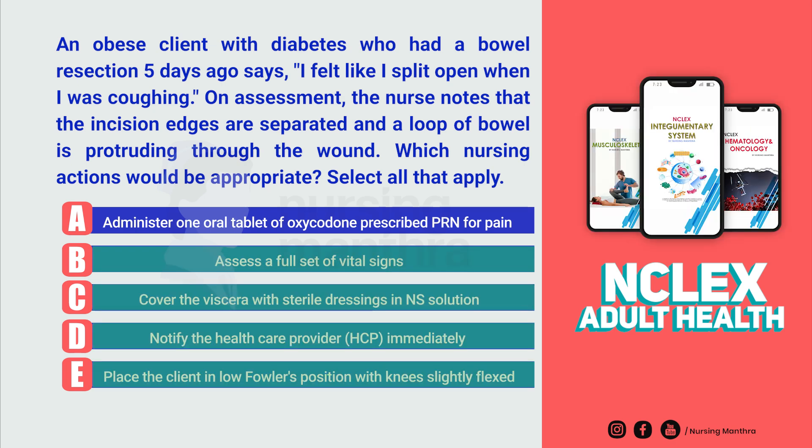The answer is options B, C, D, and E. That means: Option B — Assess a full set of vital signs. Option C — Cover the viscera with sterile dressing saturated in normal saline solution. Option D — Notify the healthcare provider immediately. Option E — Place the client in low Fowler's position with knees slightly flexed.